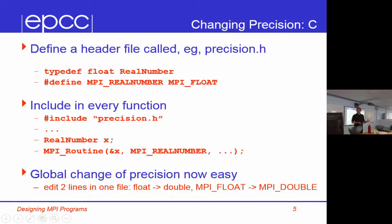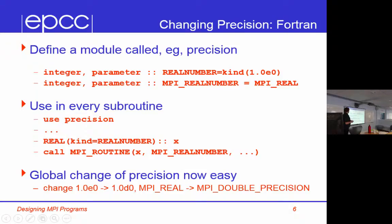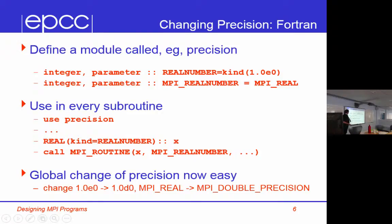In Fortran, it's a bit more robust. You can have parameterized types: integer parameter real_number is kind of 1.0e0, integer parameter MPI_real_number equals MPI_real. Then you write real(kind=real_number) x, which says x is the same kind as a single precision number. A global change of precision is now easy — you use the precision module and make two changes and recompile.